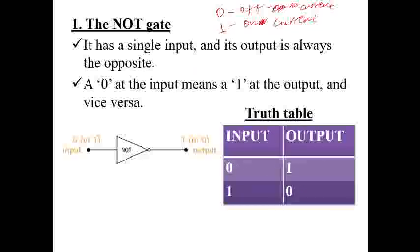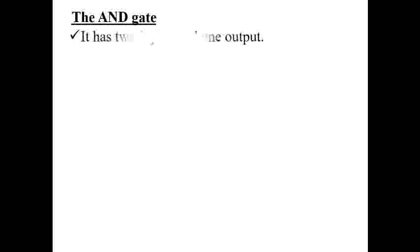The truth table for the NOT gate: if the input is 0 the output is 1, and if the input is 1 the output is 0. The output is always the inverse of the input.